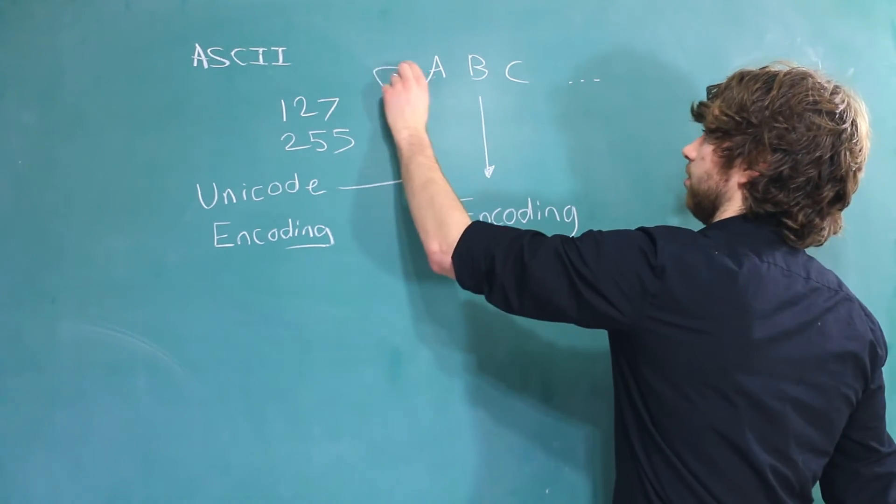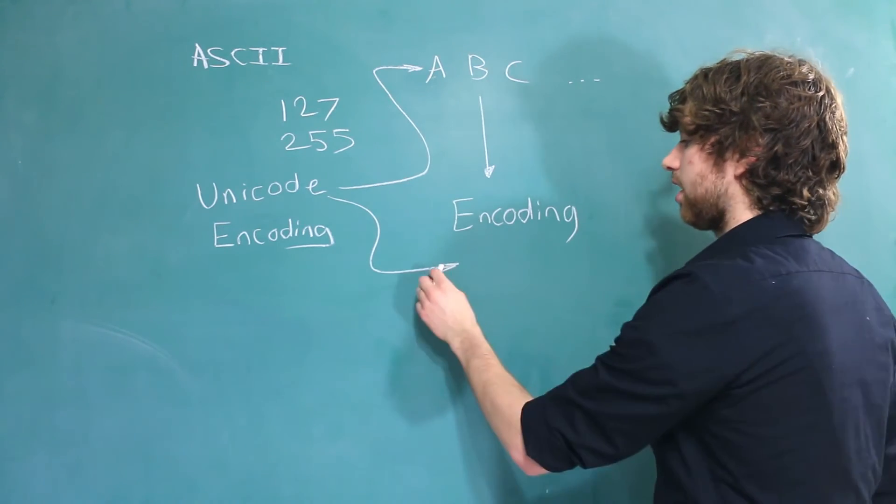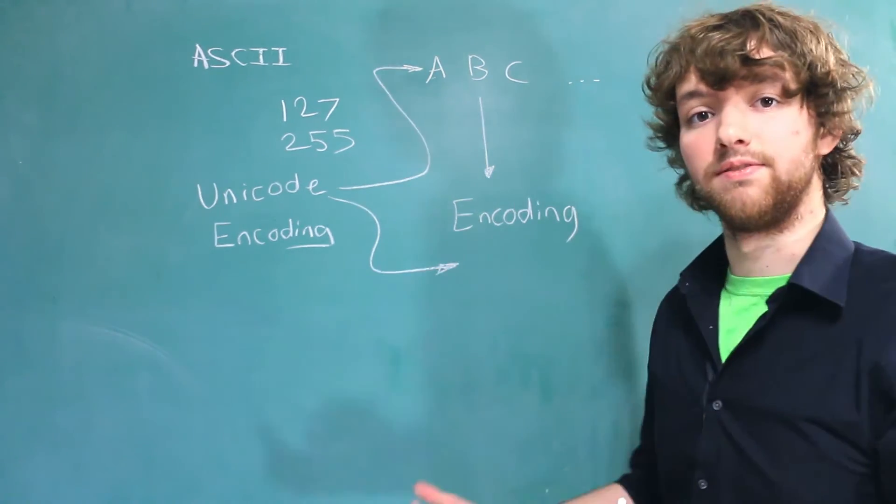So if the character set is Unicode, Unicode will have some encodings, and the types of encodings are what we're going to talk about in the next video.